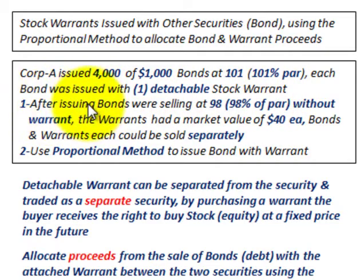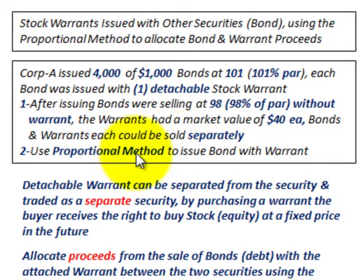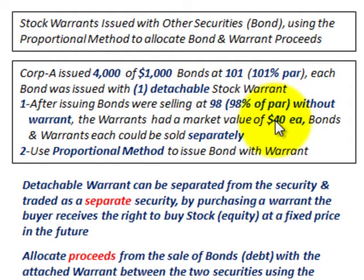After issuing the bonds, they were selling separately at 98% of par without the warrant, and the warrants had a market value of $40 each. We're using the proportional method because we know what each security could be sold separately at — the bond at 98% or $980 per bond, and the warrant at $40 per warrant.